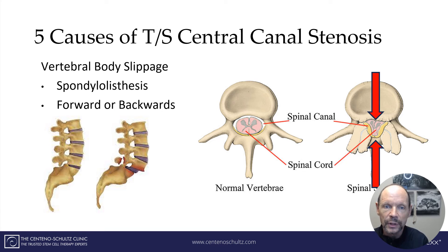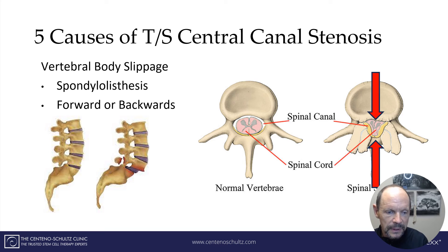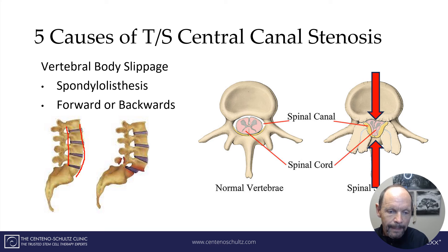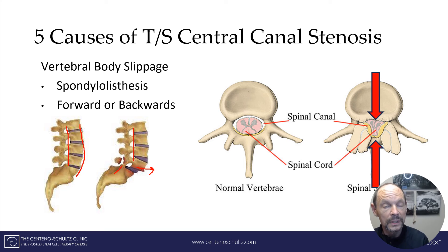The fifth cause of central canal stenosis is slippage of the vertebral body. You may hear of people slipping a disc — well, it's actually the vertebral body that slips. This is depicted here in a lumbar spine. Ideally all the vertebrae are right on top of each other, perfectly aligned. But as you can see, things can get out of alignment, and this last vertebral body has slipped forward — known as an anterior listhesis. If it slips backwards, it's a retro listhesis. Either way, the slippage causes narrowing of the canal and central canal stenosis.